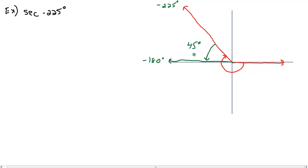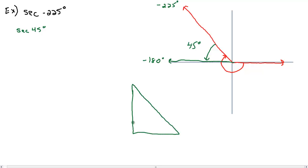Our reference angle is always going to be positive, so now that we know our reference angle is 45 degrees, we want to find secant of 45 degrees. We can pull up our special right triangle — the 45-45-90 triangle. Across from each 45-degree angle is going to be 1, and across from the 90 is going to be the square root of two.